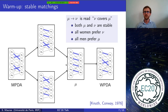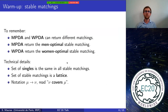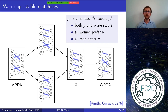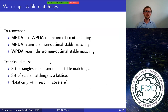To summarize the warm-up: the two procedures sometimes return different matchings — men-proposing returns the men-optimal, women-proposing returns the women-optimal. There is a lattice structure on stable matchings. Also, if an agent like m5 is single in one stable matching, they are single in every stable matching. The notation 'nu covers mu' will be useful for the proof.